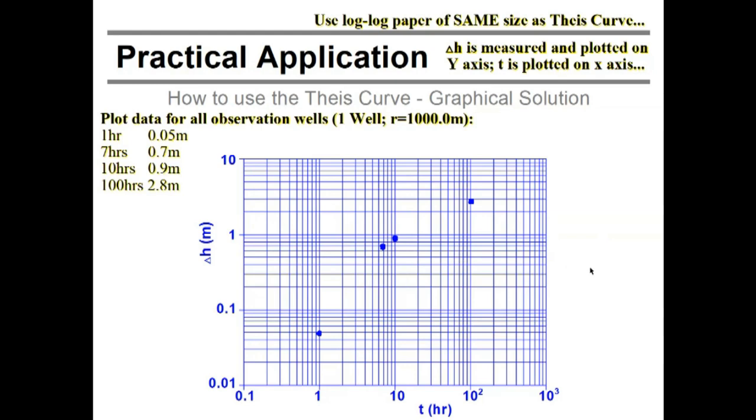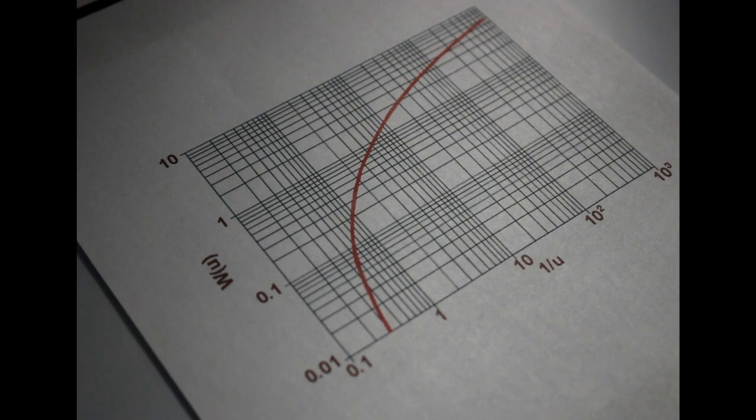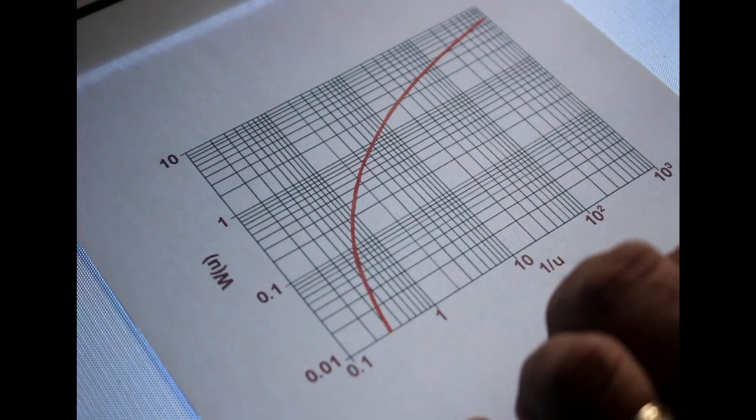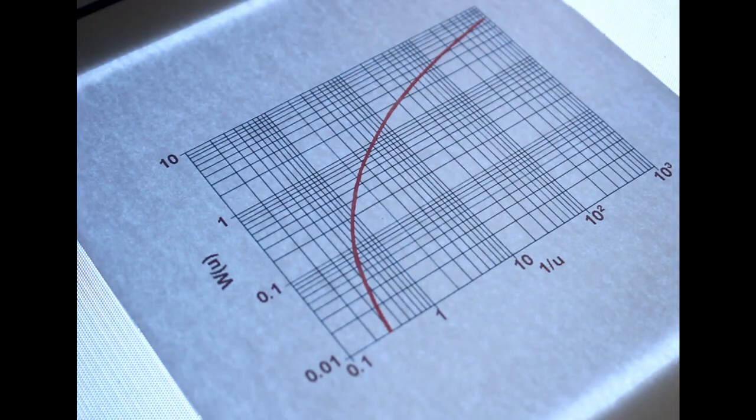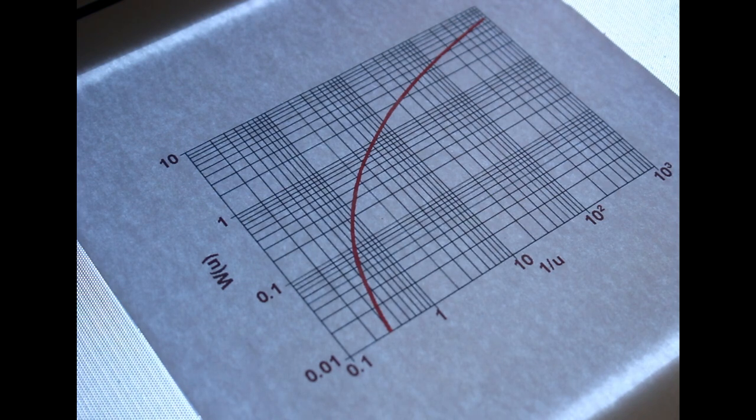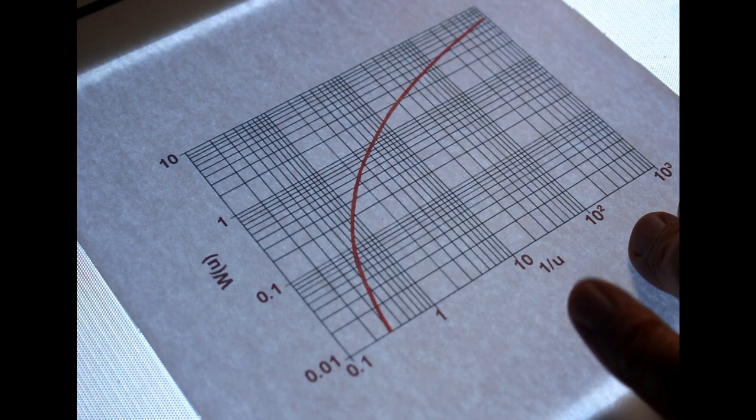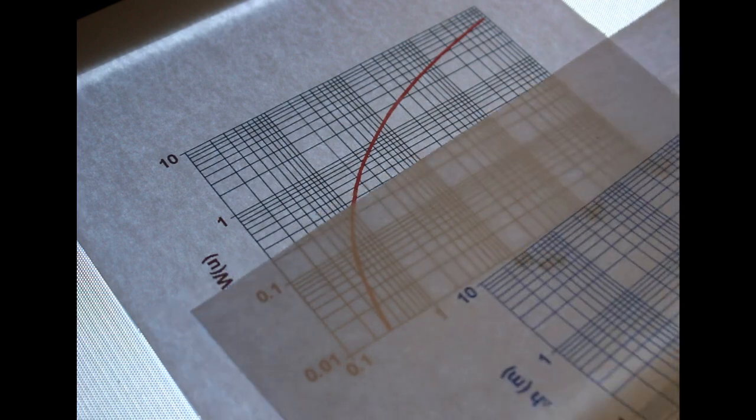Once I have done that, I now come up with the slickest solution ever. So what you do is take your constant graph, the W(u) over 1 over u, and you fix it either to a light table. I've used a light table. You can also glue it to a window. So the sun shines through. So make sure that this is set up. Take one graph and make sure it doesn't wiggle anymore.